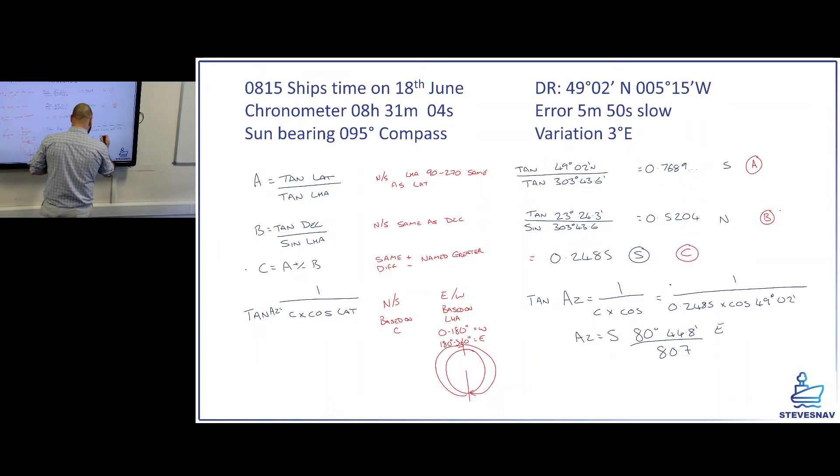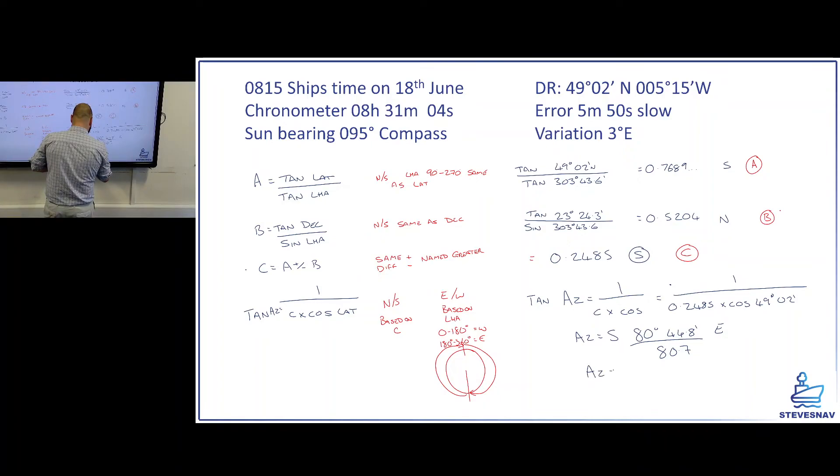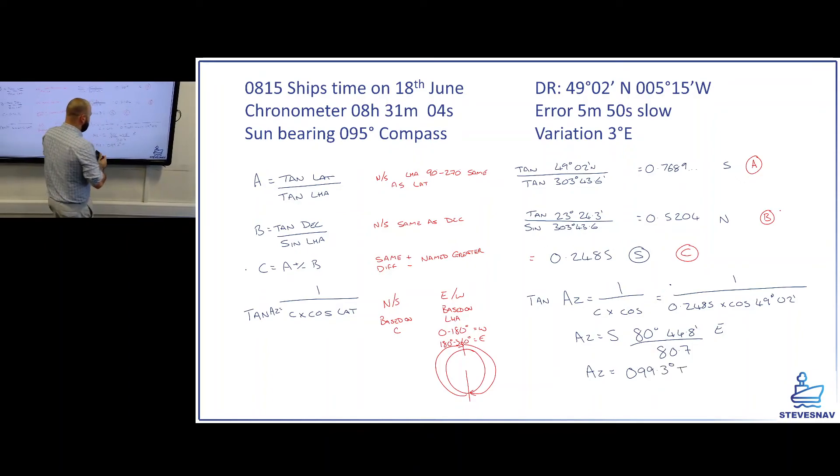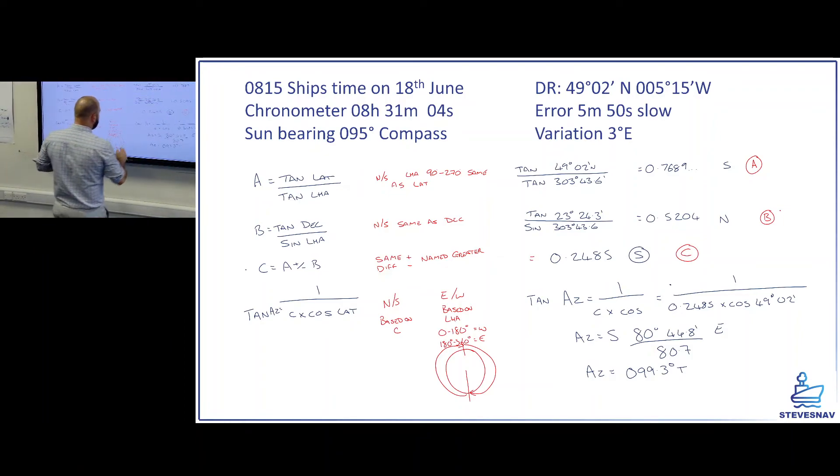So south 80.7 east is going to give us an azimuth of 099.3 degrees true. So we've got 099.3 degrees true. Our compass was 095. So what we can do, say right, let's do a compass error.